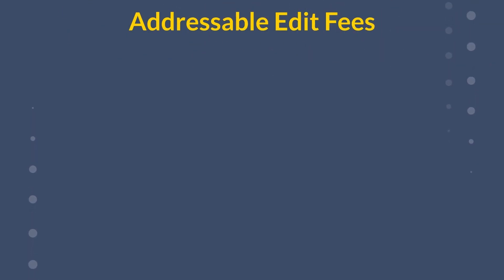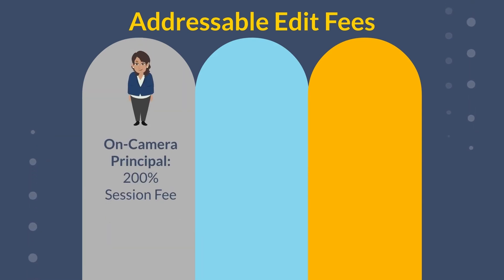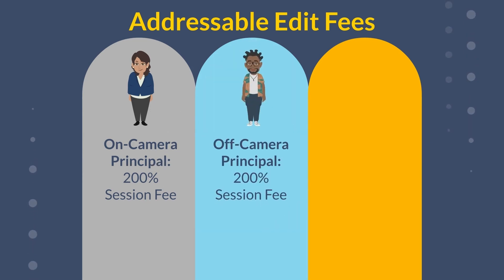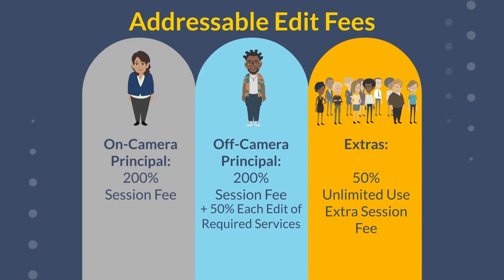Let's return to the addressable edit fees. On and off-camera principals, as well as extras appearing in addressable edits, will be paid the following fees. On-camera principals receive a one-time fee equal to 200% of the on-camera session rate. Off-camera principals receive a one-time 200% of the off-camera session rate, and an additional 50% of the off-camera session rate for each edit they are required to render services for. And lastly, extras receive a one-time fee equal to 50% of the unlimited-use extra session rate.